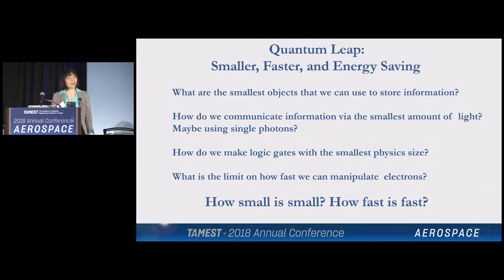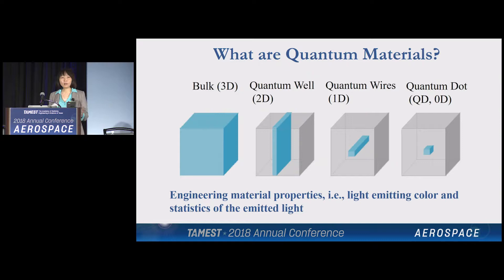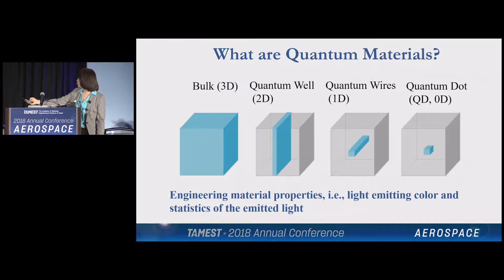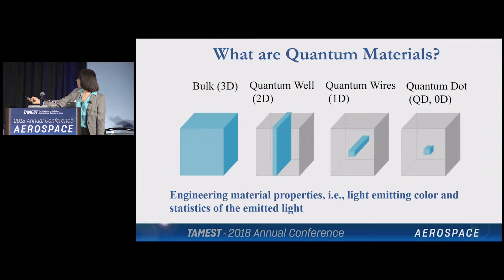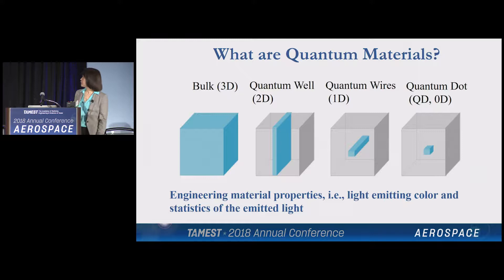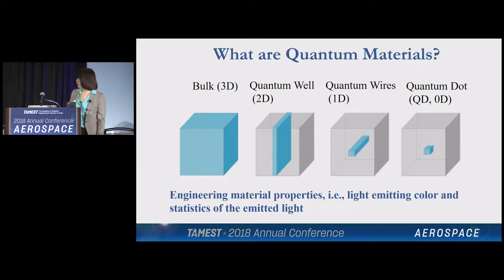Before I go further, let me define what is small and what is fast for us in the laboratory. When we say quantum materials, we're really talking about how do we reduce the dimension so we can control where the electrons go. Naturally, you take three-dimensional materials where electrons are free to move in all three dimensions, and if you can learn to sandwich materials and put different materials together, you may be able to confine the motion of electrons in a two-dimensional plane. You can further confine the dimensions and make them move in a one-dimensional line, or just confine them in a tiny box — that's called a quantum dot.